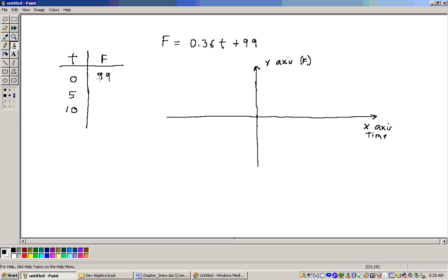So, my first point is this point right here, 0 to 99, that I'm going to need to graph. Substitute the 5 in for t, and you might have to work this out. That would be 0.36 times 5 plus 99. I'm substituting the 5 in for t.